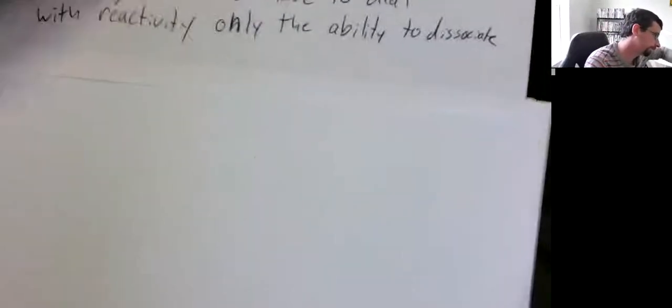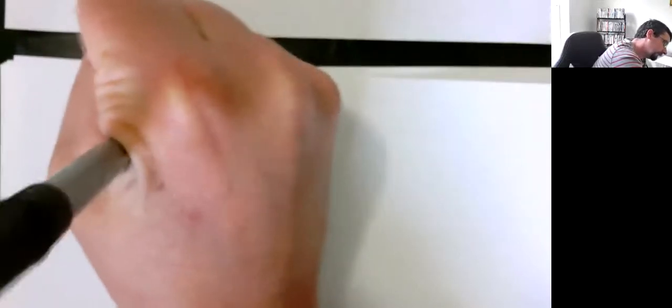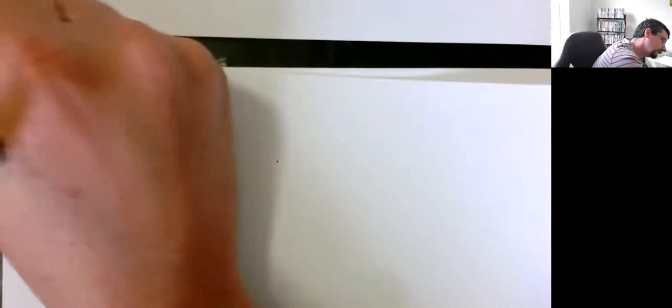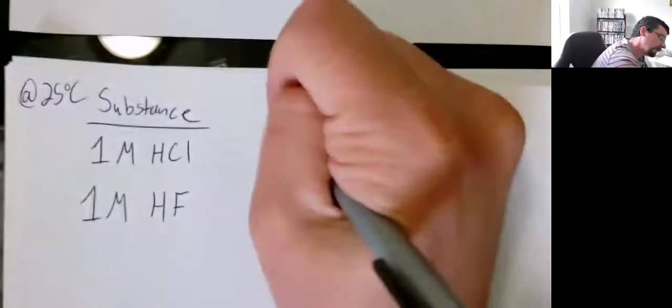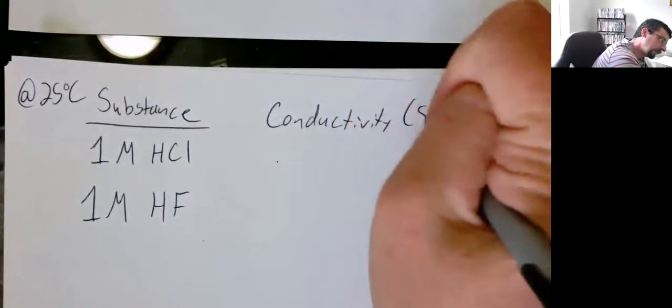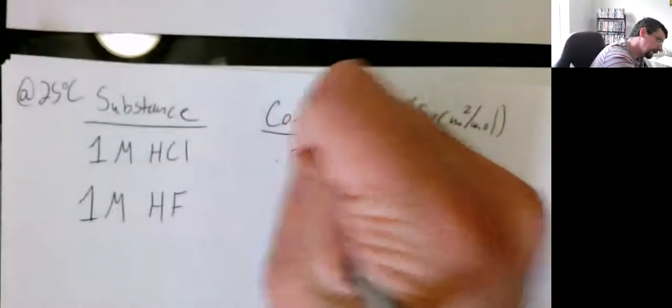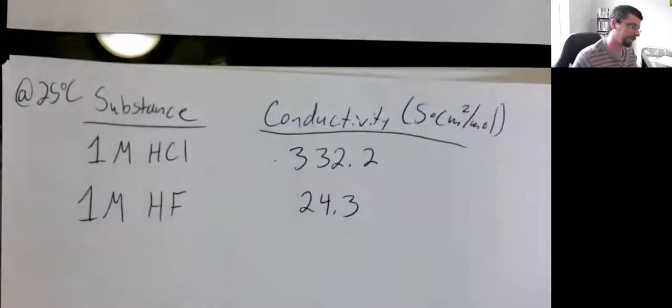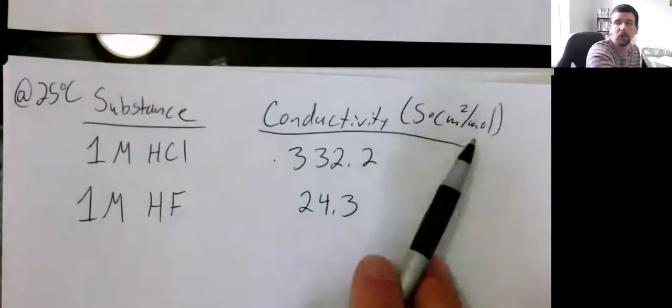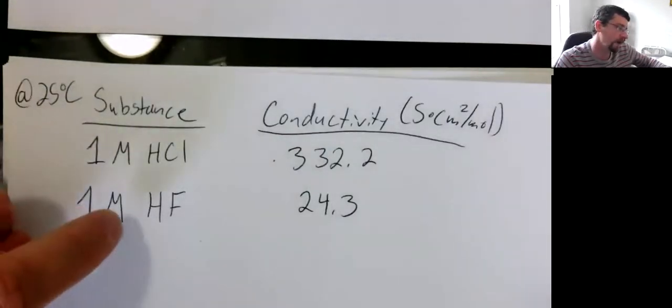To demonstrate this, I have looked up a table of conductivities. We're going to keep track of the substance. This is at 25 degrees C. We have 1 M hydrochloric acid and 1 M hydrofluoric acid. We're going to keep track of the conductivity, which has some crazy units, Siemens times centimeters squared per mole. This is a molar conductivity, essentially, normalized through moles. If you look this up, you'll find it's about 332.2 for HCl. When we're considering hydrofluoric acid, it's 24.3. The conductivity of hydrochloric acid is way higher compared to hydrofluoric acid.